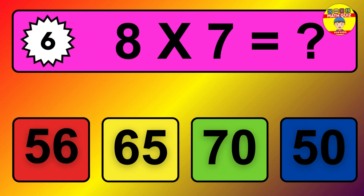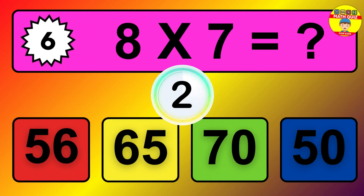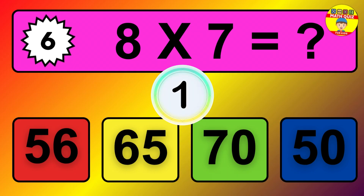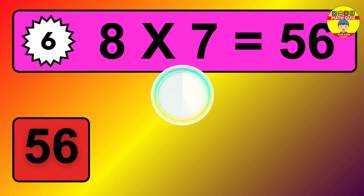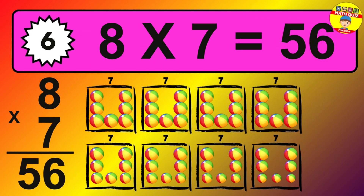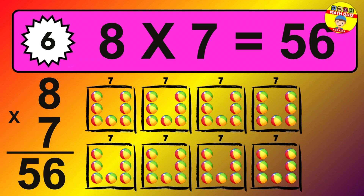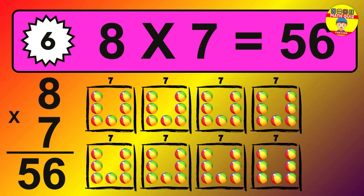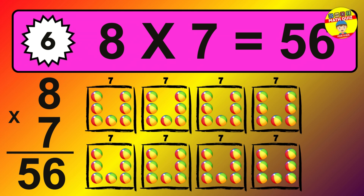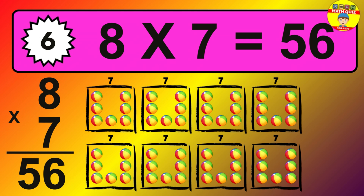Question 6. 8 times 7 equals what? The answer is 8 times 7 is 56. To calculate, we have 8 groups with 7 balls each one. So, how many balls do we have? 56 balls.